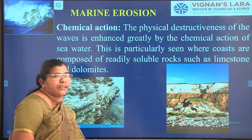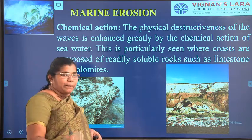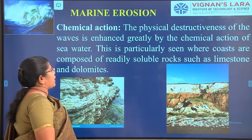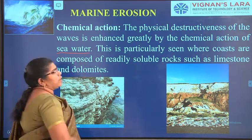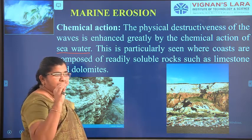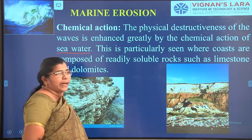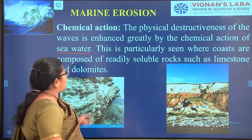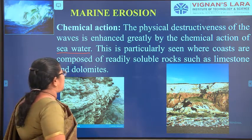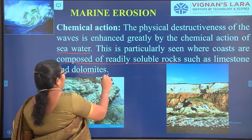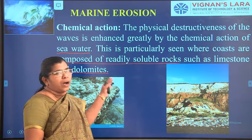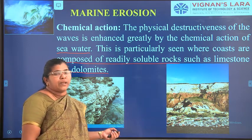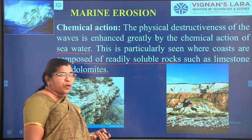The next type is chemical action. Sea water already contains some chemicals. The physical destructiveness of the waves is enhanced greatly by the chemical action of the seawater. Due to physical action alone there is only small weathering, but with chemical action the effect of erosion is much greater. This is particularly seen in coasts composed of readily soluble rocks such as limestone and dolomites. These erosion effects are mostly found at the shore of the sea.